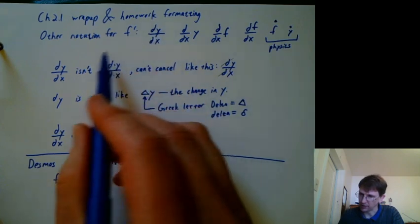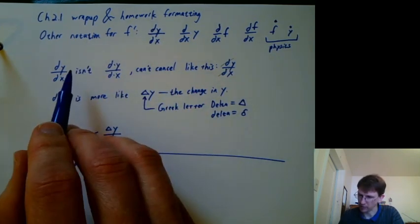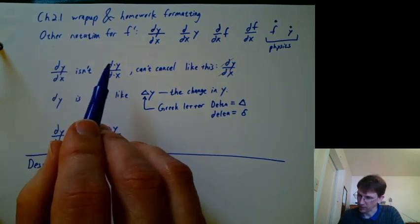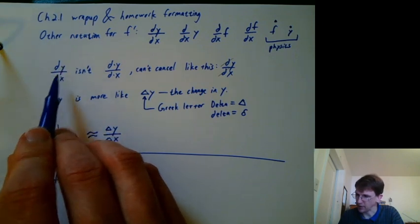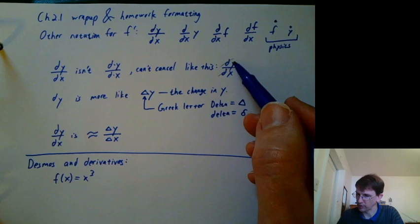We'll be using dy over dx a lot more in chapter 3 and chapter 4, mostly chapter 4, also the end of chapter 2. But it's important to remember it's not really d times y over d times x. You can't just cancel the d's and be left with y over x.